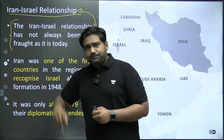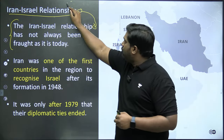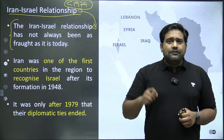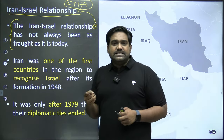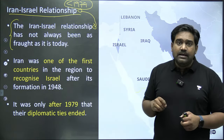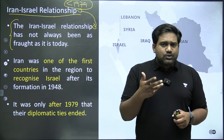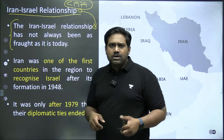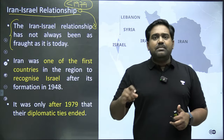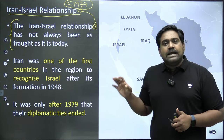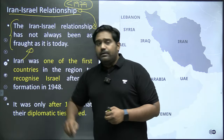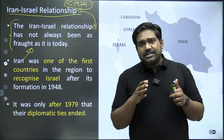If you look at the Iran-Israel relationship prior to 1979, believe it or not, Iran and Israel were very close friends. Iran was one of the few countries in the West Asia region to have recognized Israel and established diplomatic relations with it, even before other Arab countries. It's quite shocking, because many of you know that Iran and Israel today are regional rivals with a lot of hostility between them, involved in a covert war for many decades. But before 1979, both Iran and Israel were friendly towards each other. Iran had even recognized Israel's independence as early as the late 1950s.